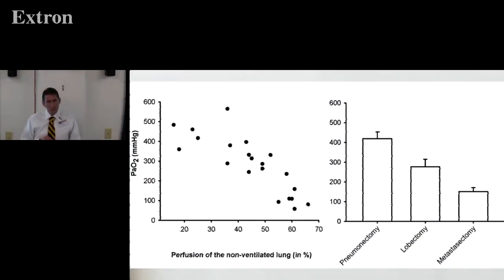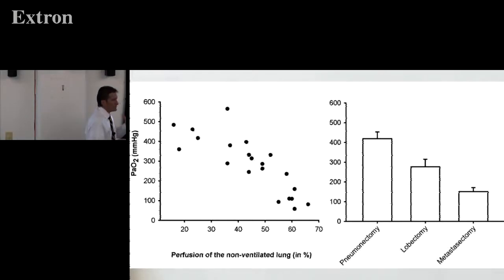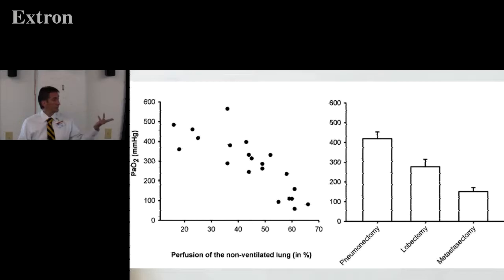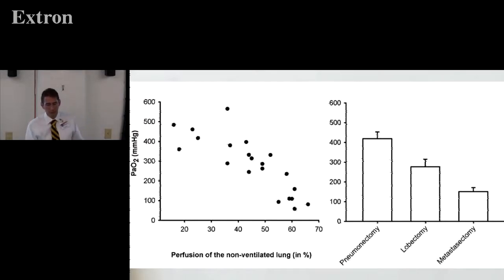This data shows mean PO2 versus type of procedure. Pneumonectomy patients actually have a higher PO2 than someone having a small wedge resection of metastatic cancer. That makes sense because during a pneumonectomy the surgeon is going to clamp that pulmonary artery — they get rid of all the Q on that side. You've already stopped ventilating, and then you eliminate the perfusion, so the system is matched back up.